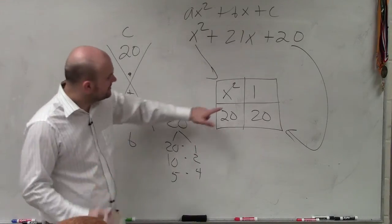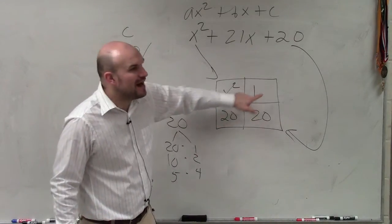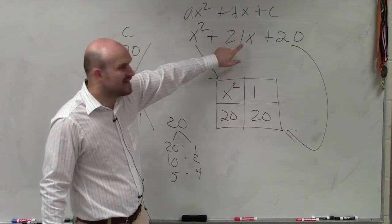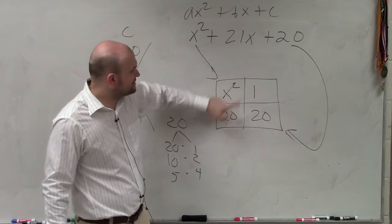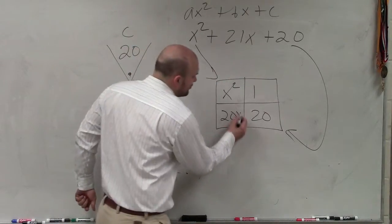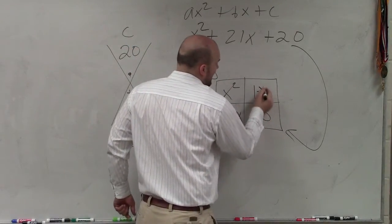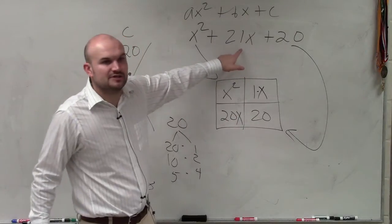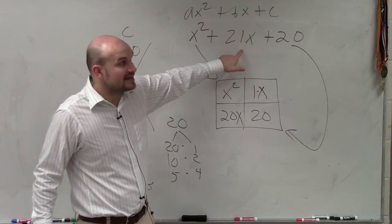Now remember, though, these two boxes have to represent my middle term. So they can't be 20 and 1 because 20 plus 1 gives you 21. I need them to be 20x and 1x, right? Because 20x plus 1x gives you 21x.